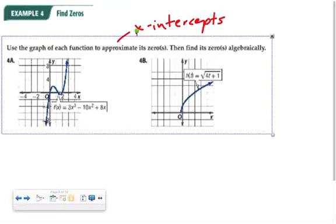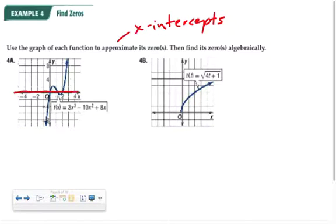And again, notice what they're asking us to do. They're asking us to look at the graph to approximate the zeros, so to get a general idea of where our answers should end up when we do this algebraically. And then we'll do it algebraically. Okay, so in part A, I have 3x to the third minus 10x squared plus 8x. And in my graph, again, I'm looking for where it's crossing the x-axis. It looks like it's heading at 0, maybe 1.75 and 2.